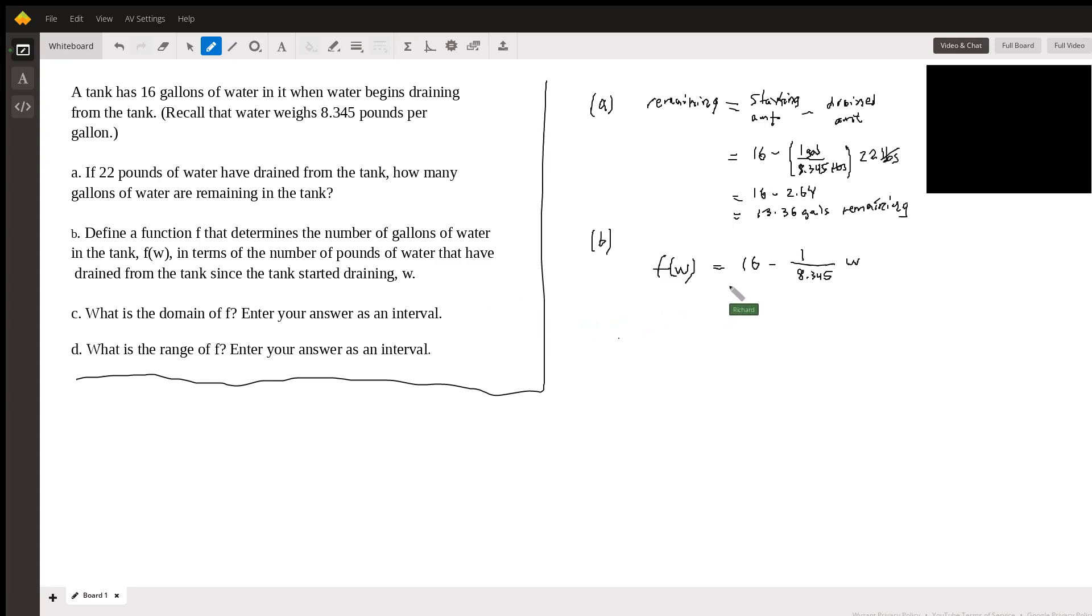And, you know, I think you might want to consider the graph here before answering questions about domain and range. First of all, you have to realize that this is a linear function. And when W is zero, so W here is drained, this is the amount drained. F of W is the amount remaining.